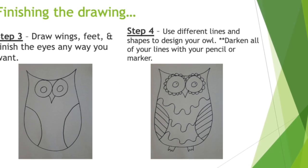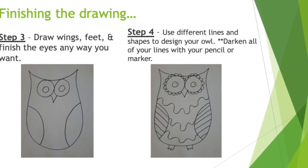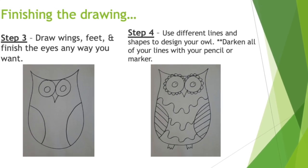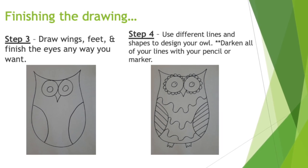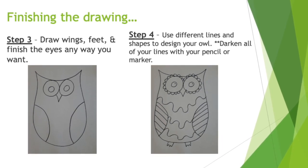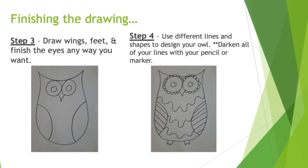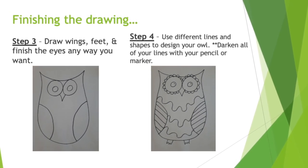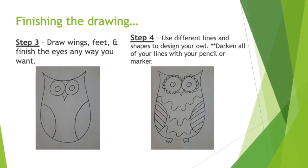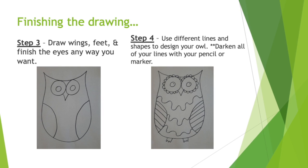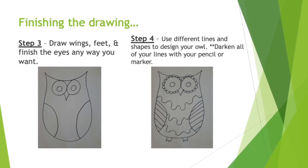Step three is to draw the wings, the feet, and finish up the eyes the way you want. This is just one example of the way you could do the wings. Then, once you have the basic spaces, you're going to fill them in with different lines and shapes to design your owl. Once the owl is all drawn and designed, darken all your lines with a pencil or trace it with a marker.